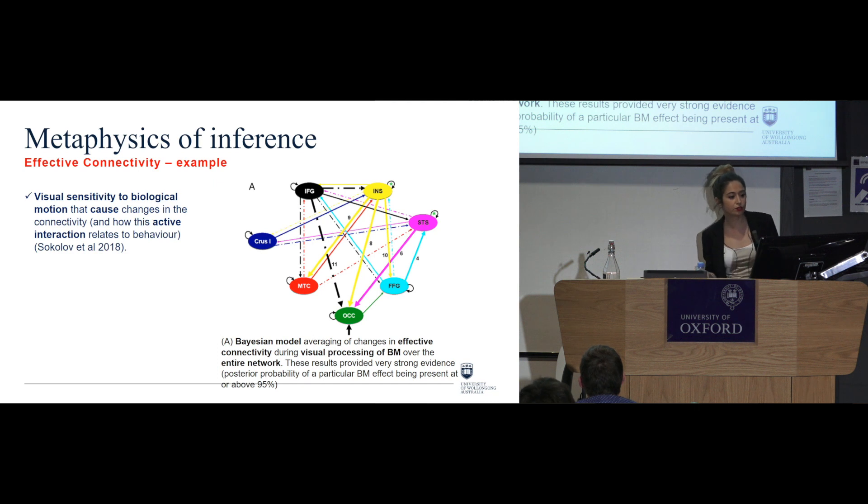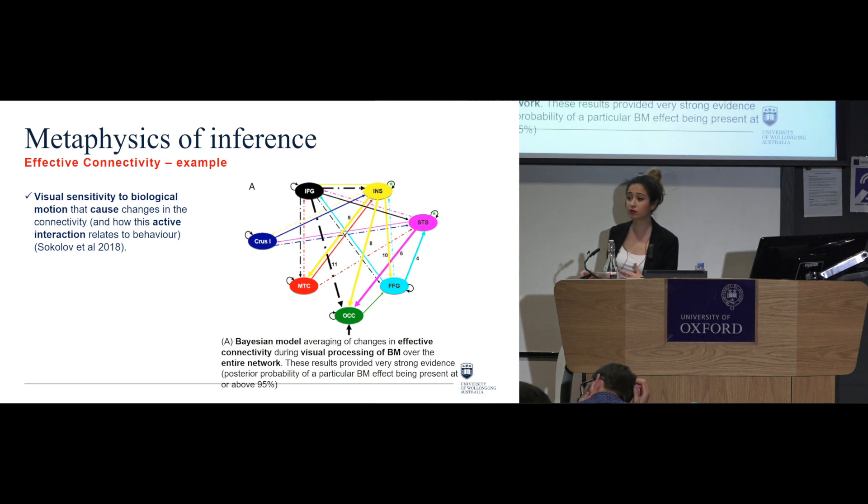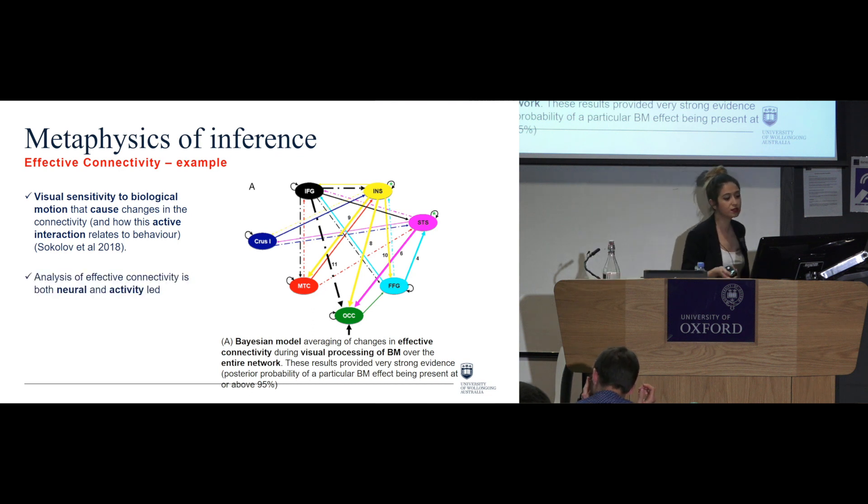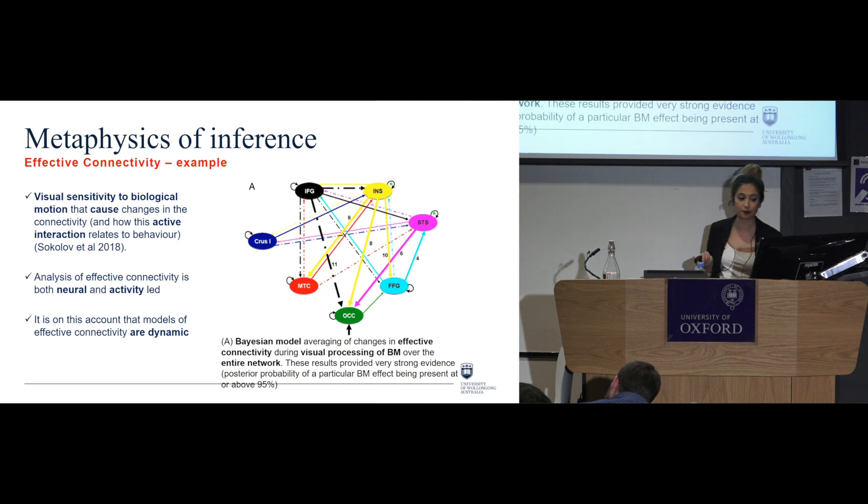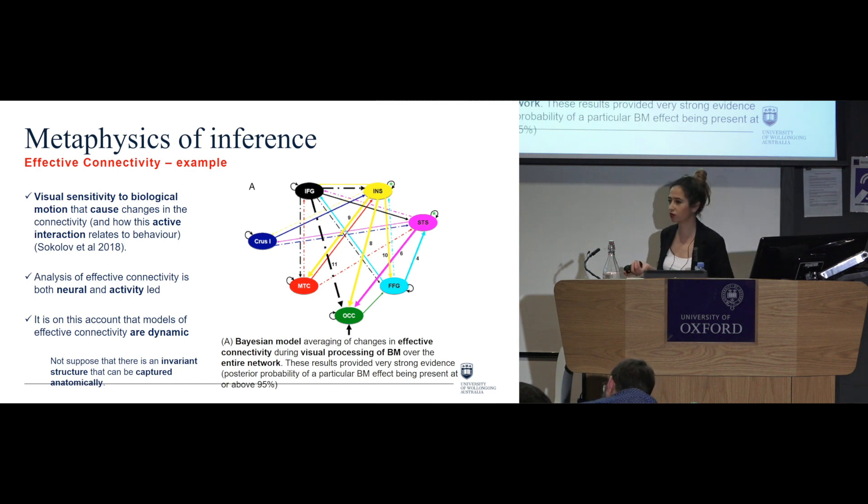One example of these studies on effective connectivity can be found, for example, in Sokolov and colleagues, when they look at visual sensitivity to biological motion, that cause changes in the connectivity and actually how this active interaction relates to behaviour. So this analysis of effective connectivity, it can be said that it is both neural and activity led. And it is on this account that these models are carried by effective connectivity are said to be quite dynamic. So the idea is that they do not suppose that there is this invariant structure that can be captured anatomically.